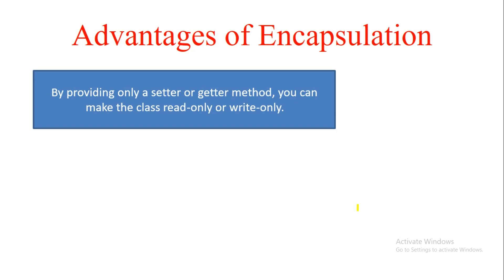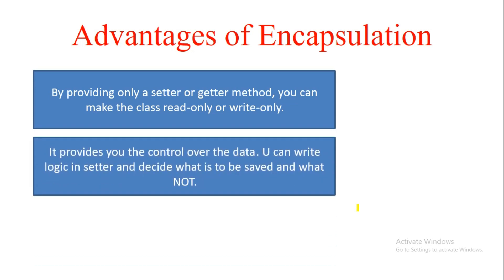Similarly, if you make only getters, then there is no way any outside entity can write to the class — it becomes read-only. You can only read the values of variables; you cannot modify or write them. That is how you make the class read-only or write-only by providing getters, setters, or optionally one of them or none.